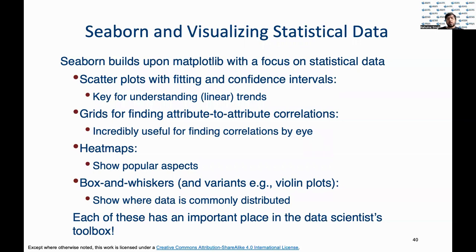Through this second part of the video, we focused on building detailed visualizations using Seaborn, which is a Python library that allows for robust statistical data analysis. Some of the plots that we covered were scatter plots, pair plots, heat maps, and box and whisker plots. Combined together, these are the most important statistical analysis tools that data scientists use regularly. And with this, we end our lesson on visual analytics. Thank you.